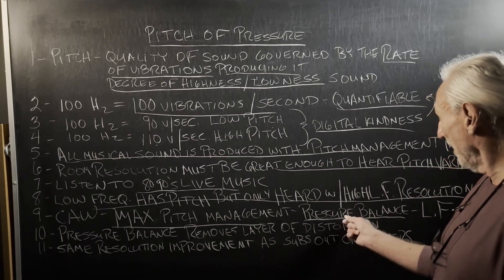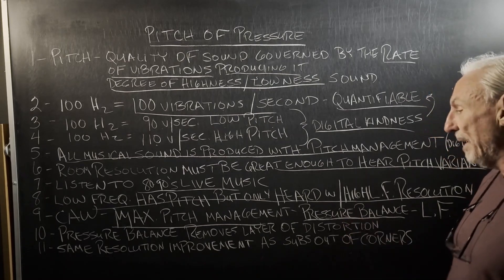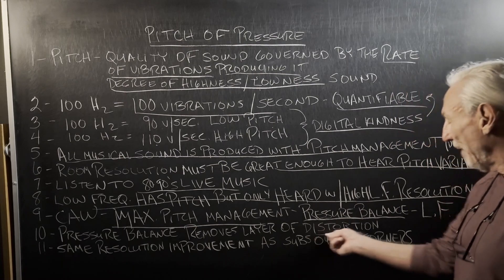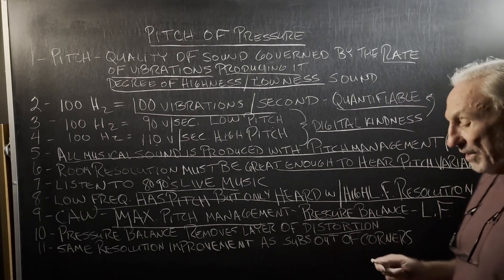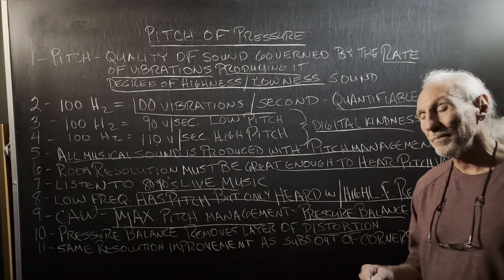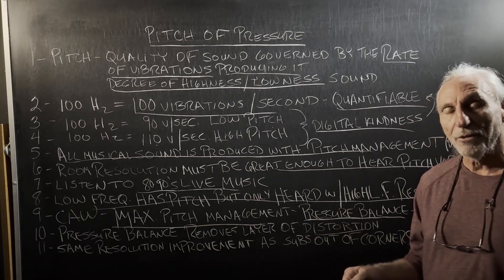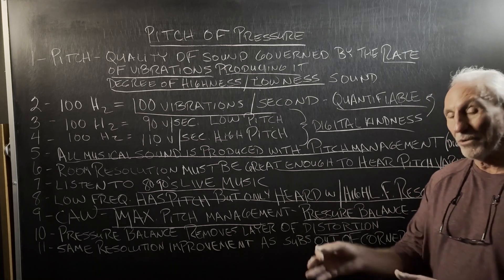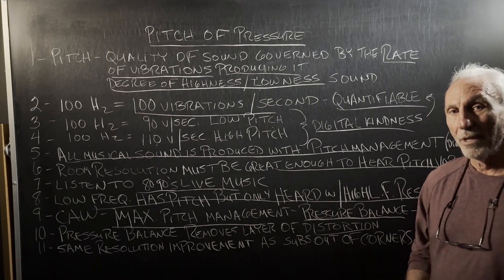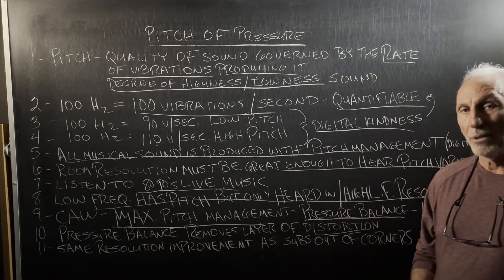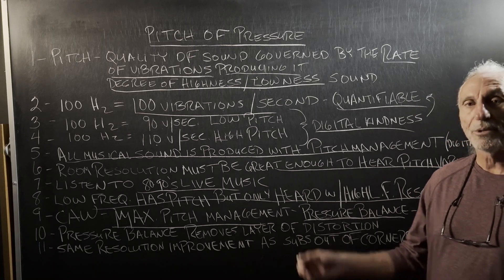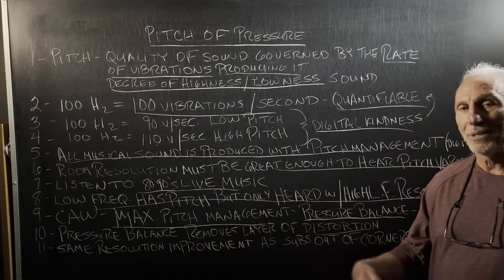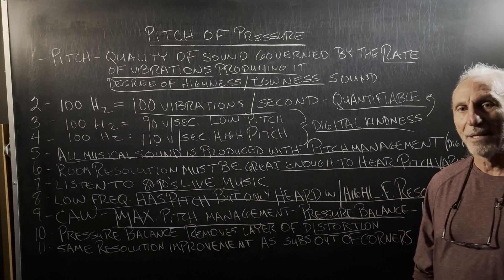So you've got to have a pressure balanced room. The CAW does that. The pressure balancing removes a layer of distortion, because I'm sure you've heard this where you say: move this around, move this around, try to get out of the room modes. Well, room modes are every 36 inches in a room. How are you going to dodge that bullet? You're not.